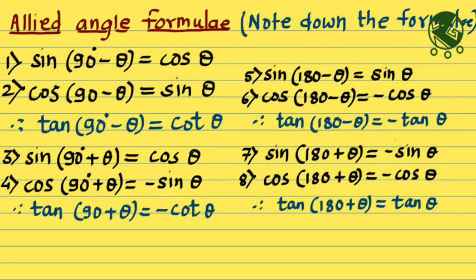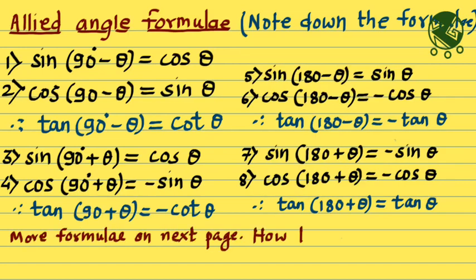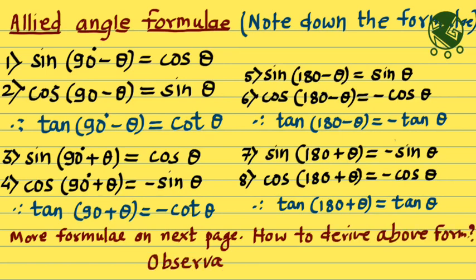This is really crucial: tan of 180 plus theta is again tan theta, so it repeats after 180 degrees, unlike sine or cosine which repeat after 360 degrees.